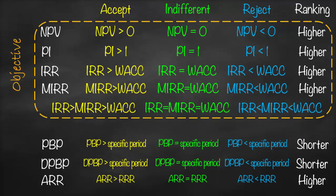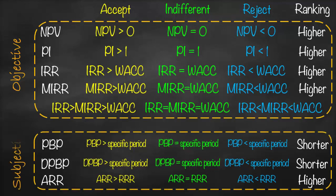We can apply the same concept to the reject decision. If NPV is negative (lower than zero), the Profitability Index must be lower than one, IRR must be lower than WACC, MIRR must be lower than WACC, and IRR must be lower than MIRR must be lower than WACC.